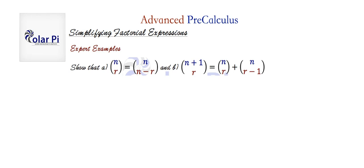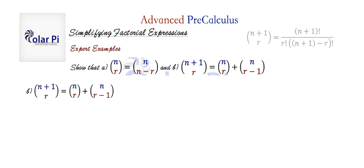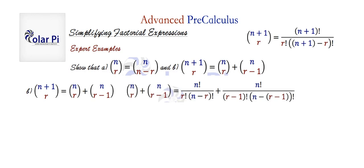Let's go to b. b is to show that n plus one choose r equals n choose r plus n choose r minus one. First, by definition, n plus one choose r is this expression up here — I've put it up there so we have in mind where we need to go. By definition, n choose r plus n choose r minus one are going to look like this.